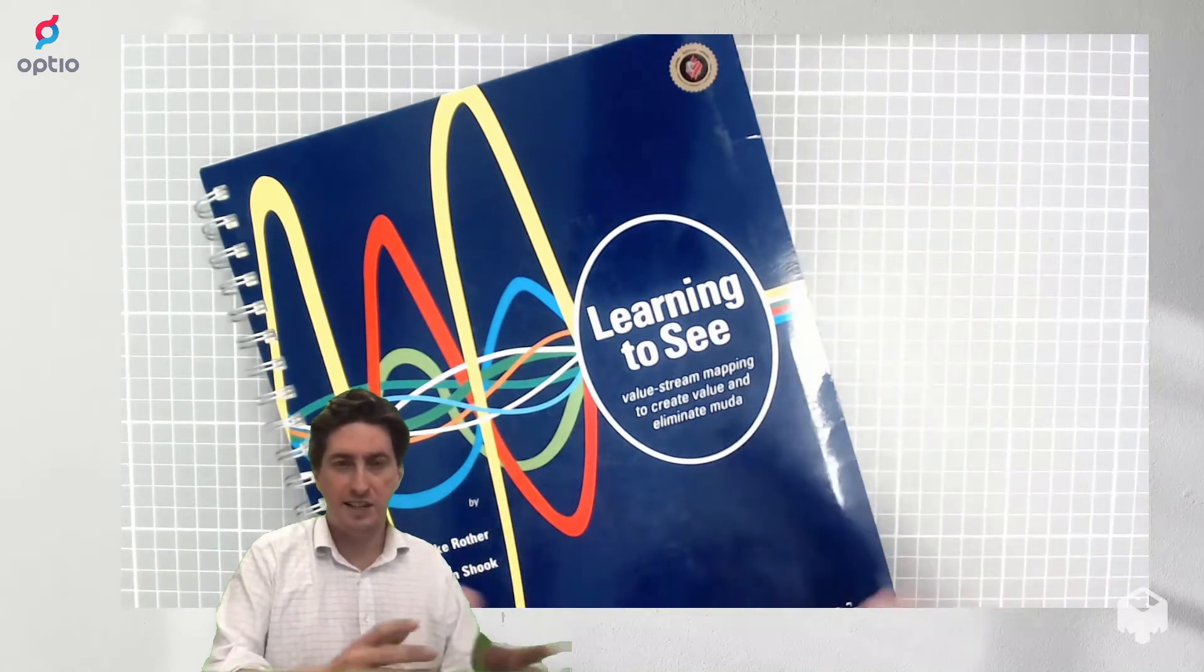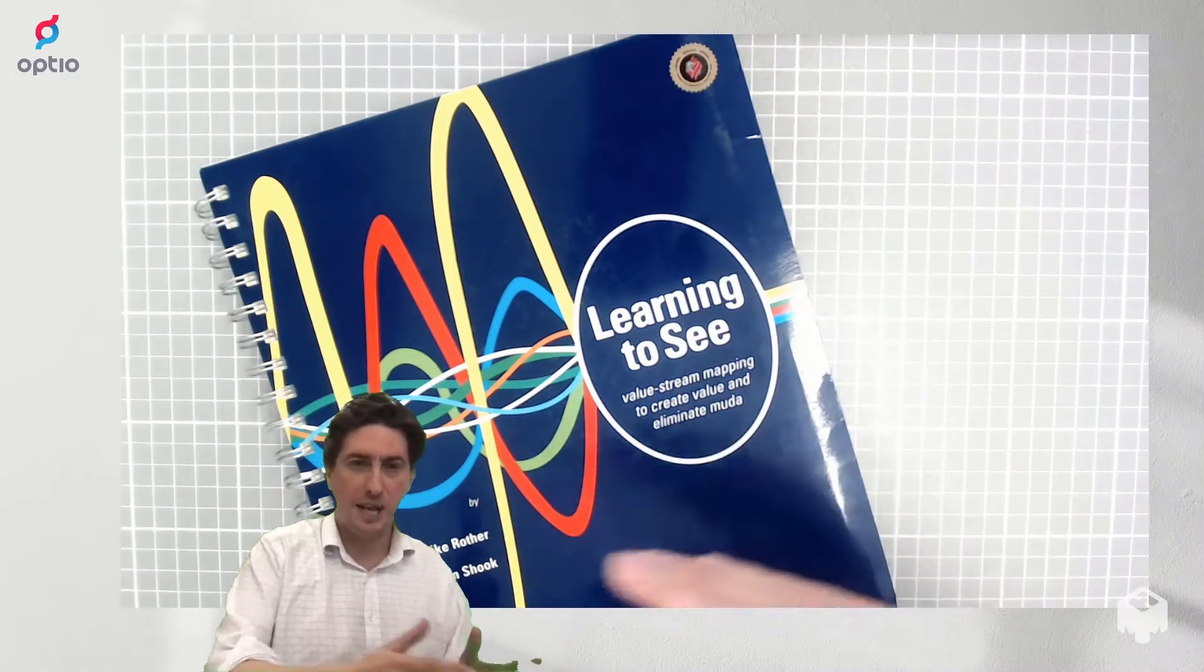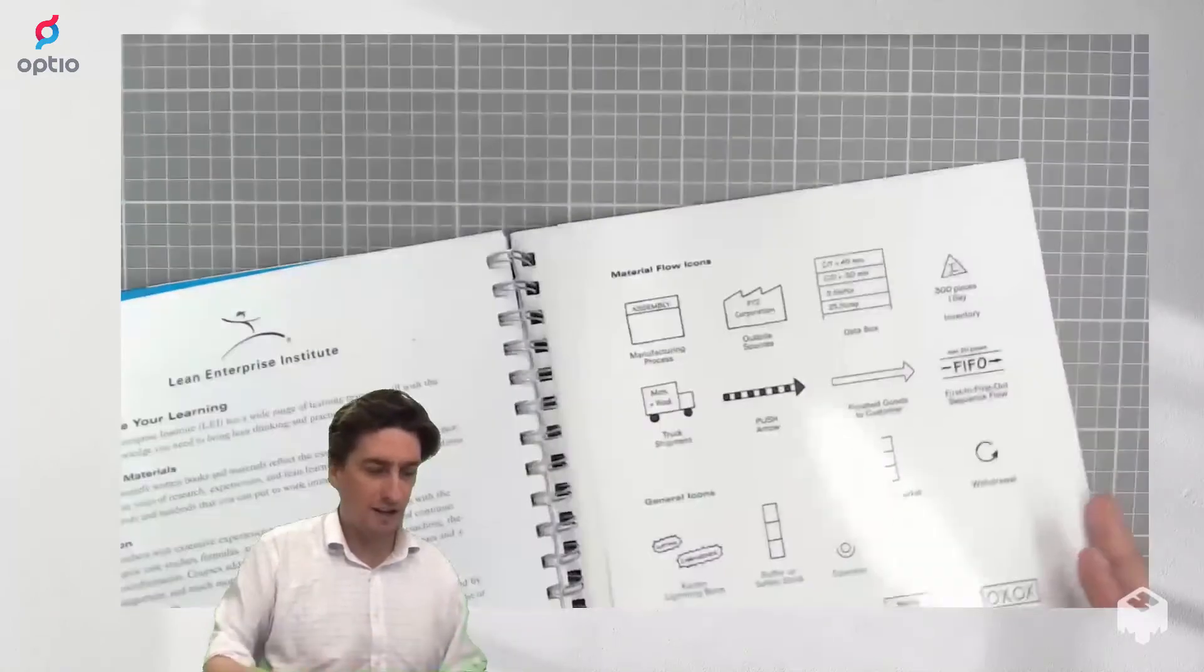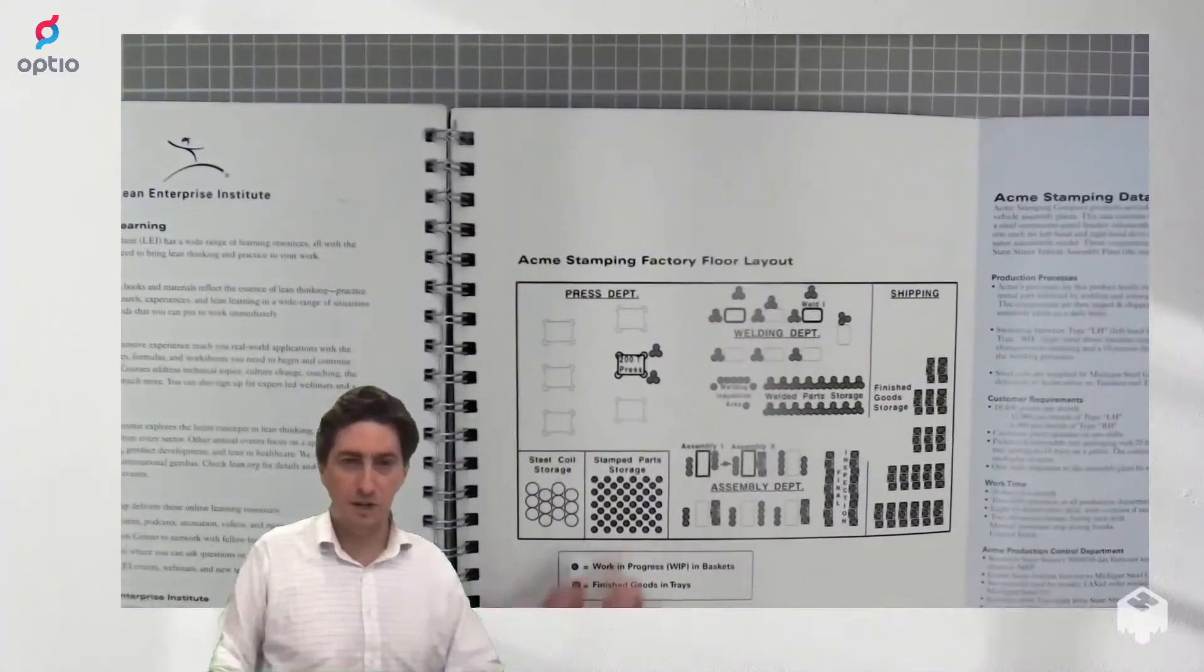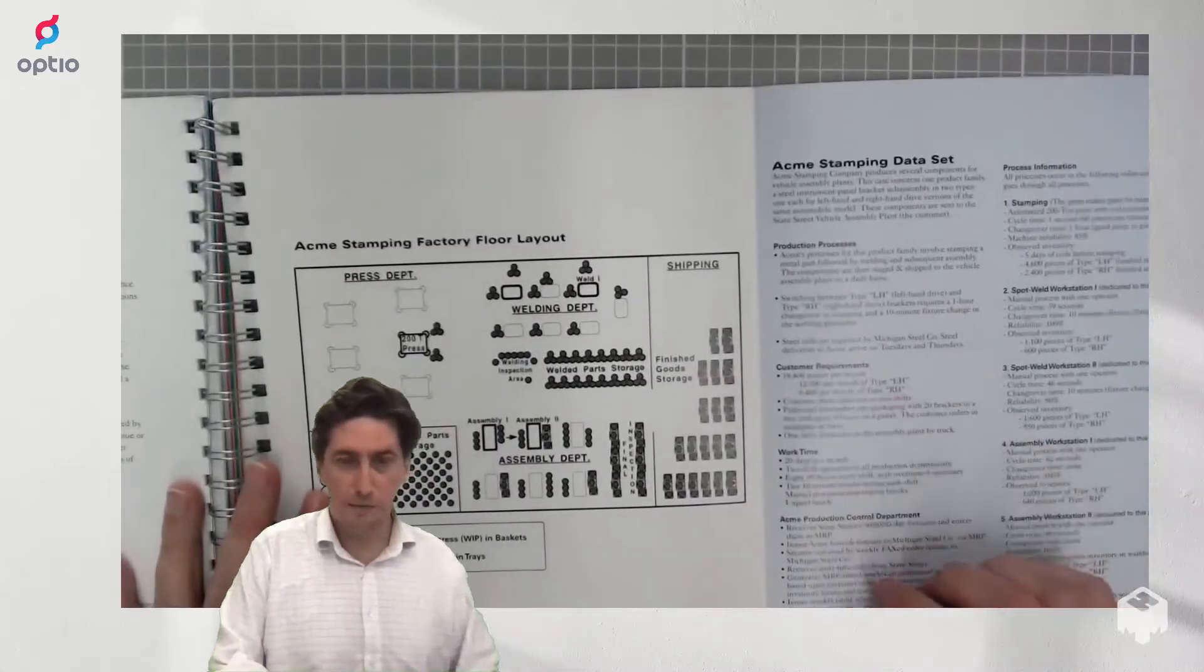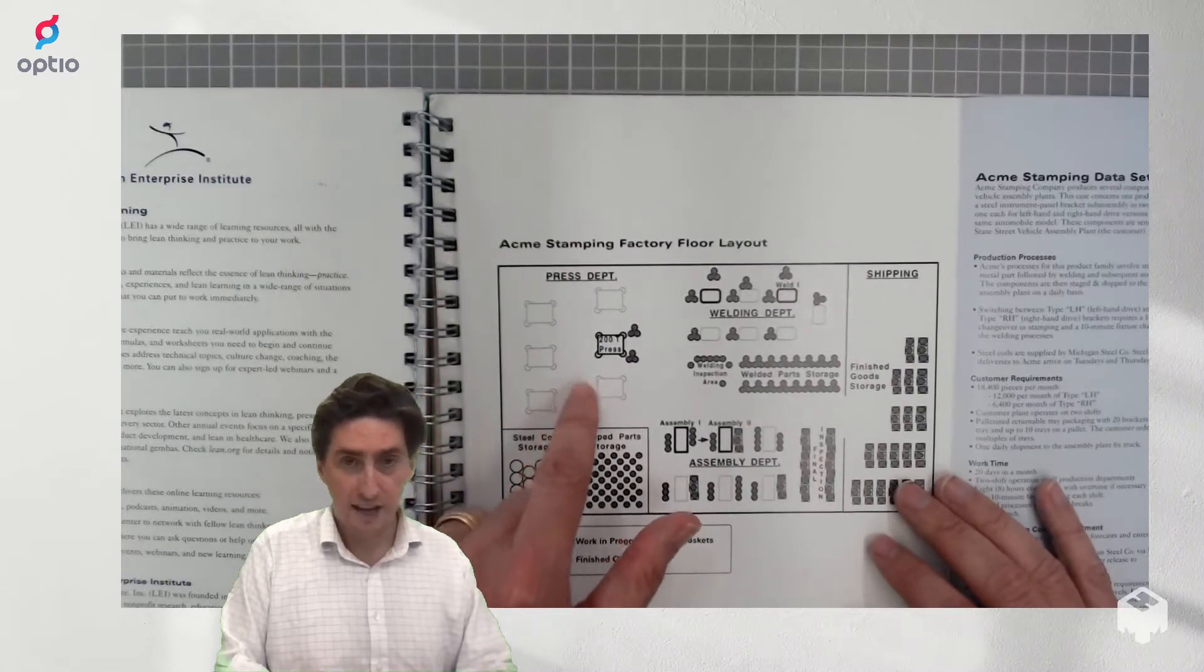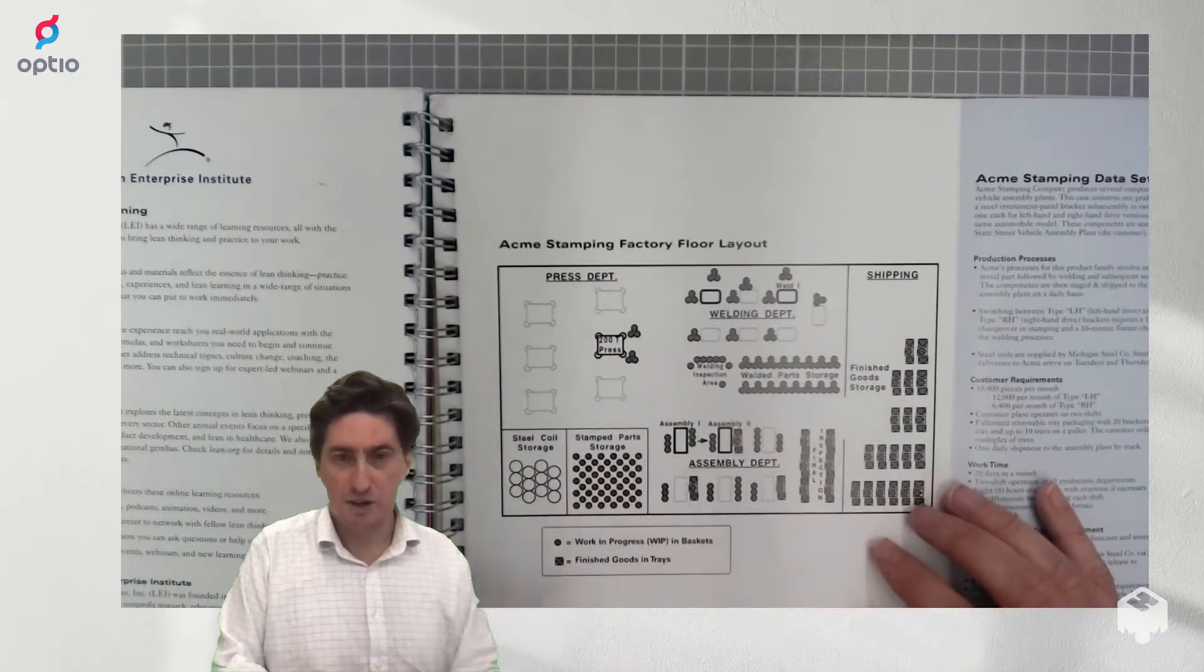So what customer value is changes a little bit all the time, but the idea of value stream mapping is to map out the steps that you take in your company to create that customer value. The way that the book goes about this is it has an ACME stamping manufacturing factory for which you get the floor plan and a lot of data as well as the customer requirements. What the factory does is it takes steel coils and stamps them in the press, then welds them together, assembles them and then ships them out to the customers.